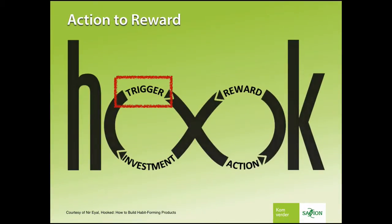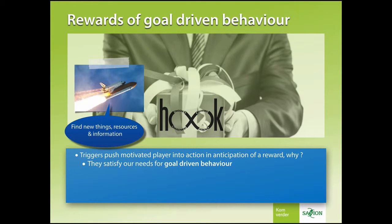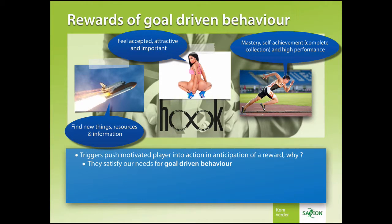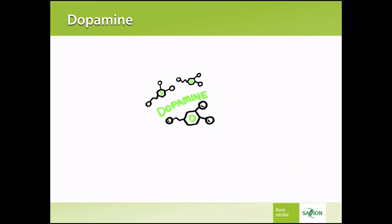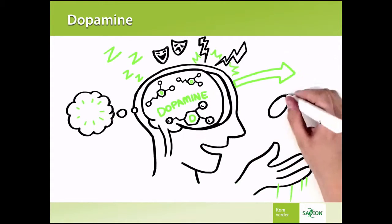We created a trigger that moved the player into action. Now it's time to think about the reward. The trigger in our game pushed the player into action in anticipation of a reward. Why? Rewards are important because they satisfy our needs for goal-driven behavior. We like to find new things, resources, and information. We enjoy feeling accepted, attractive, and important. And we are self-motivated on mastery, self-achievement, like completing a list or collection, and high performances. Three totally different types of reward — but do they have a single core ingredient? The reason is dopamine. Created in various parts of the brain, dopamine is critical in all sorts of brain functions including thinking, moving, sleeping, mood, attention, motivation, seeking, and reward.